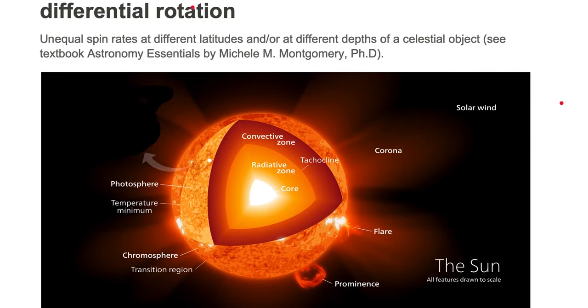We're looking at different rotation rates. Let's look at different depths first. In the case of the sun, we have the core, the radiative zone, and convective zone. We have three distinct layers of the interior.